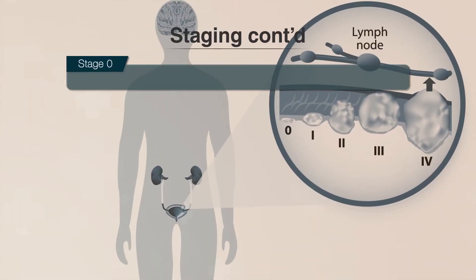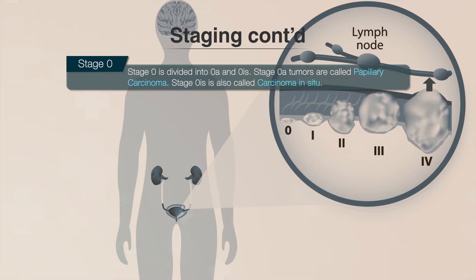In stage 0, there are abnormal cells on the inner layer of your bladder. Stage 0 is divided into 0A and 0IS, depending on the type of tumor. In stage 0A, tumors called papillary carcinoma look like little fingers or mushrooms growing toward the center of your bladder. In stage 0IS, also called carcinoma in situ, tumors on the inner layer of your bladder are flat.